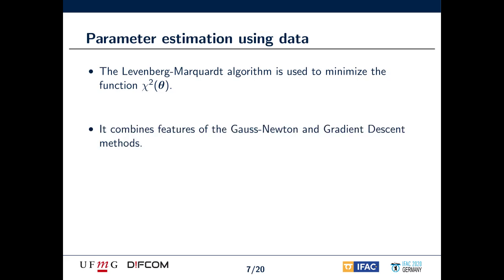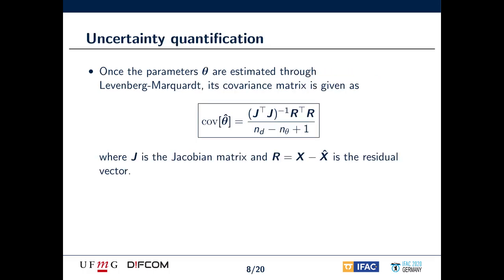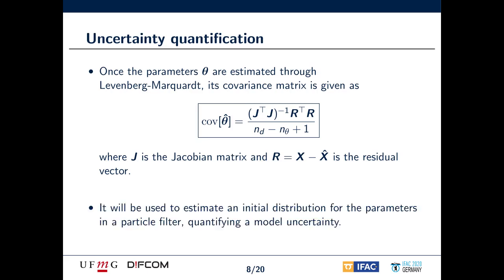This is done by minimizing the sum of weighted squares of residuals, where X is the entire training dataset, X hat represents the values estimated using the proposed degradation model, and W is the weighting matrix composed by measurement errors. We can use the Levenberg-Marquardt algorithm to do that. This algorithm is an interpolation between the Gauss-Newton algorithm and the known gradient descent method. It starts by favoring gradient descent increments, and as the solution approaches a local minimum, the algorithm uses Gauss-Newton increments. When we use the Levenberg-Marquardt algorithm, it is possible to compute the covariance matrix of the model's parameters. Then it is possible to use it as a way to quantify the uncertainty related to the model's construction for prognostics applications.